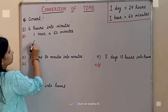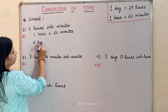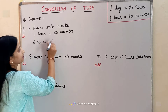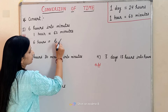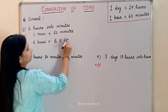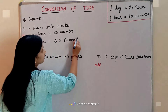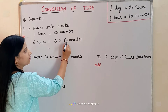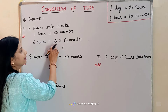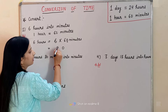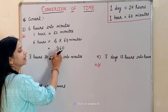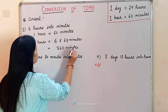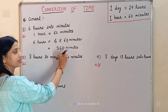So in 6 hours, there will be how many minutes? We will multiply 6 by 60. There is a zero, so first we put zero. Then 6 times 6 we get 36. So the answer will be 360 minutes. This means 6 hours is equal to 360 minutes.